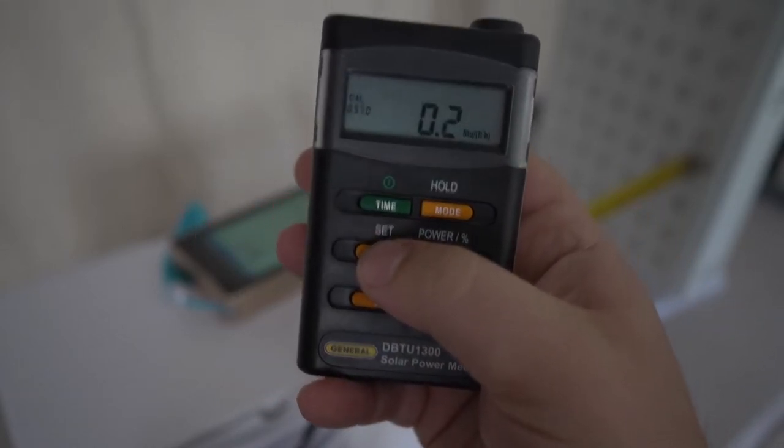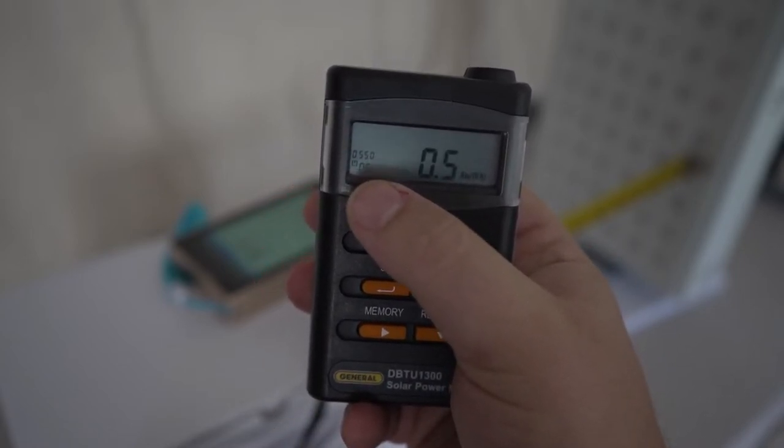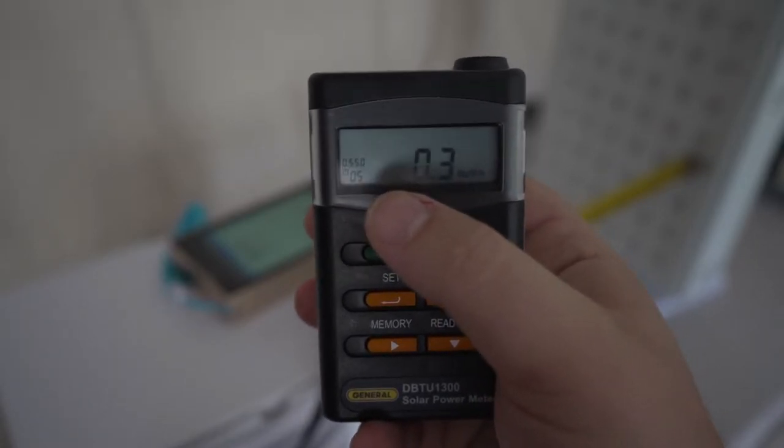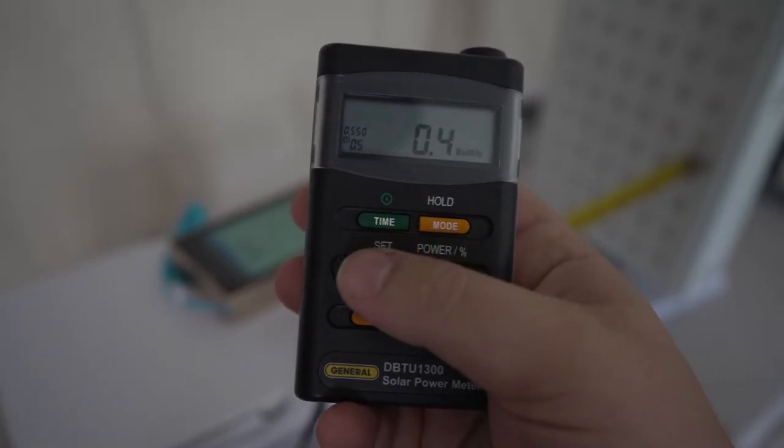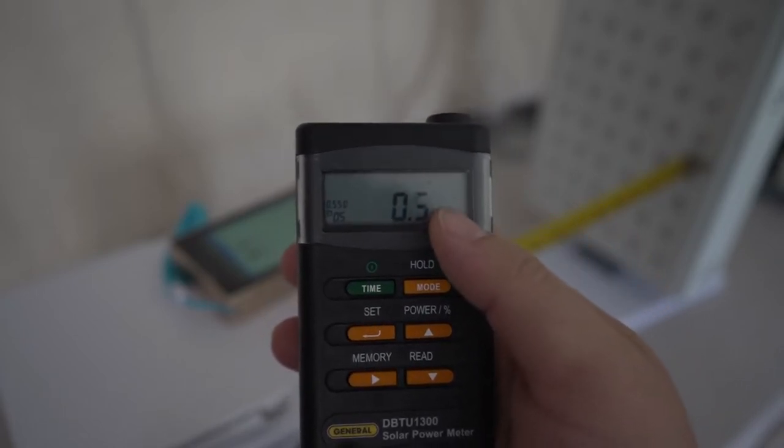So then we set it to 0.55. And then we're going to press set again. And that kind of sets it. So now it's set to 0.55. So it's just a linear correction factor. There's a drawback that these don't measure linearly.